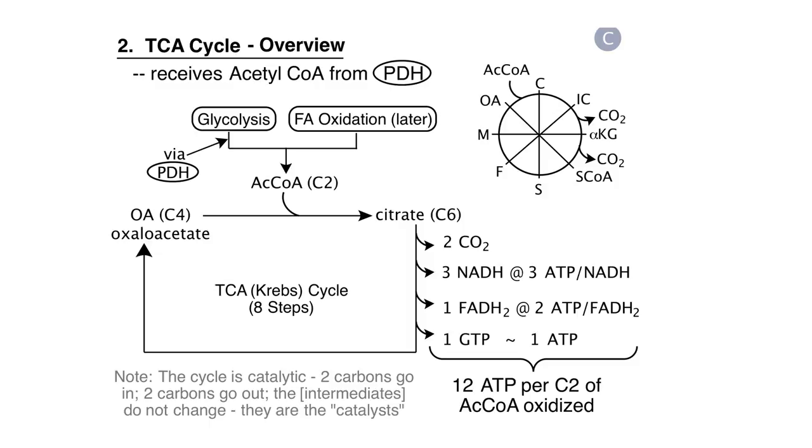Citrate will lose two carbons as carbon dioxide, and in the process there will be a series of oxidation steps that generate three NADHs, one FADH2, and one either GTP or ATP by substrate-level phosphorylation. The NADHs generated in the mitochondrion are exchangeable for about three ATPs. FADH2 is exchangeable for about two ATPs.